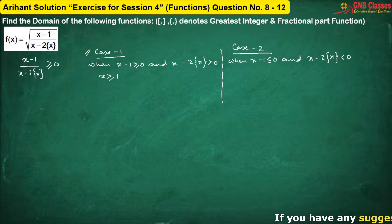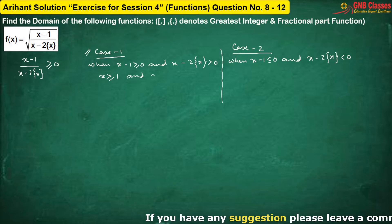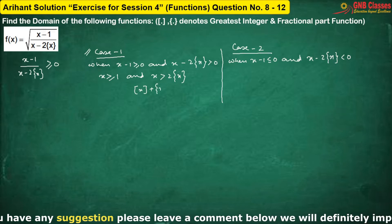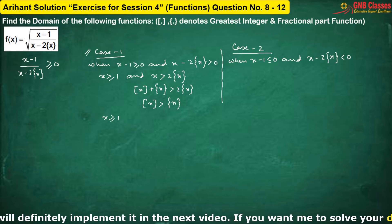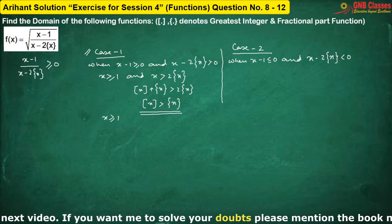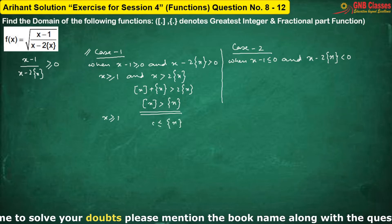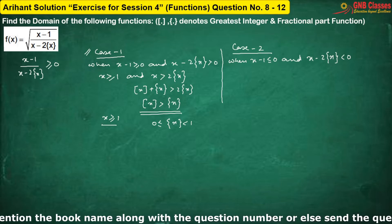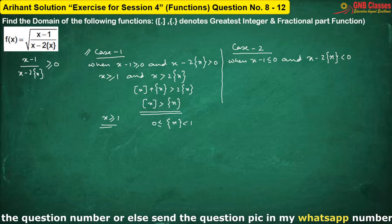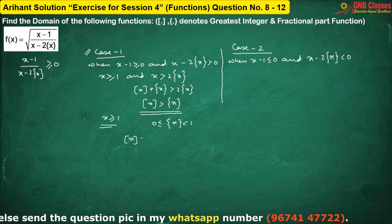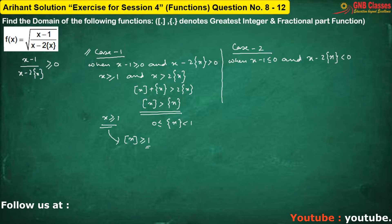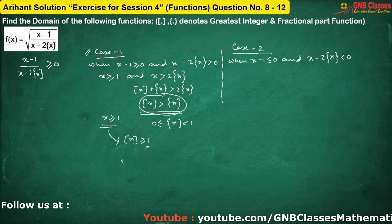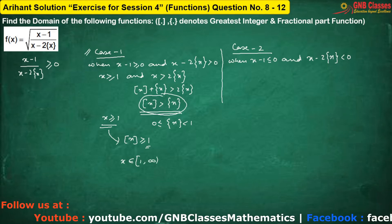Considering Case 1: from the first condition we get x ≥ 1. From the second, x can be written as floor(x) plus fractional part of x. When x ≥ 1, the fractional part of x always lies between 0 and 1, so floor(x) will always be greater than or equal to 1. Therefore, 1 will always be more than the fractional part. This condition is satisfied by all values from 1 to infinity.